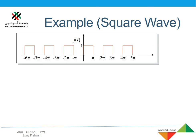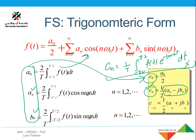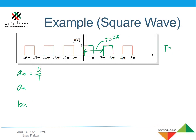This is the square waveform — a similar example to what we have been doing. Now we have to get the trigonometric Fourier series. We need to calculate a_n and b_n values. The first thing is to calculate the time period — here the time period T is 2. We use the formula 2 over T, integrating from minus T over 2 to T over 2. Since T is 2, the factor 2 over T becomes 2 over 2, which simplifies. We integrate from minus T over 2 to T over 2.